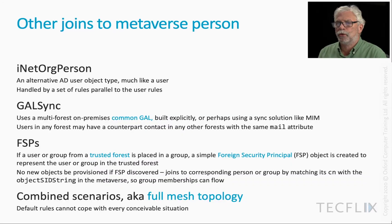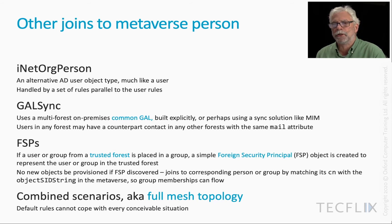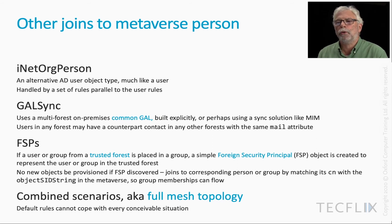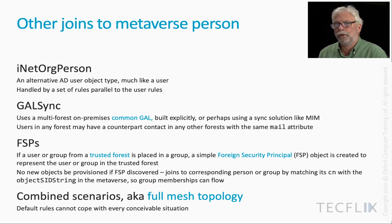Other object types might join to a person in the metaverse — it's not just users. The first would be inet.org person. An inet.org person is almost entirely parallel to a user; it behaves very much like a user but is sometimes used in preference. There's a whole set of rules that completely parallel the user set of rules, so everything that applies to users can be said about inet.org persons.